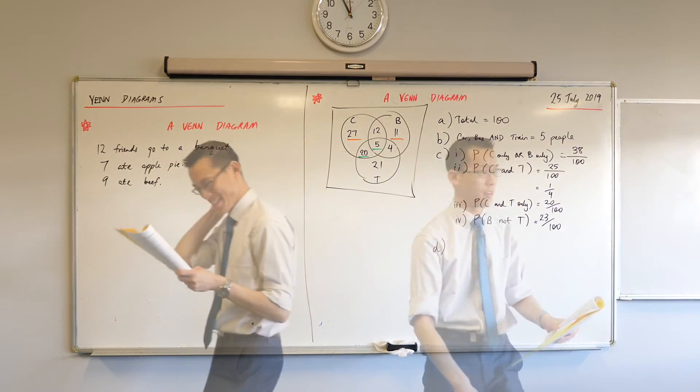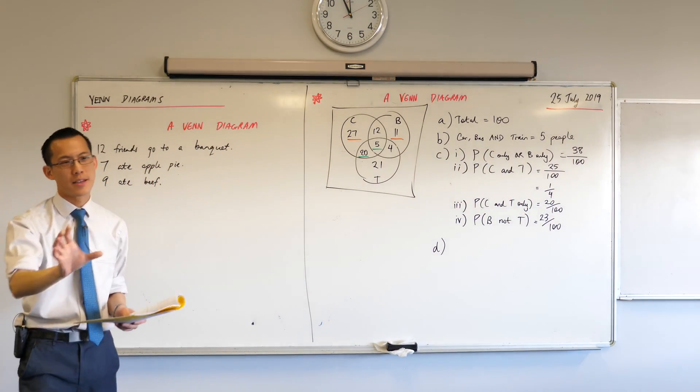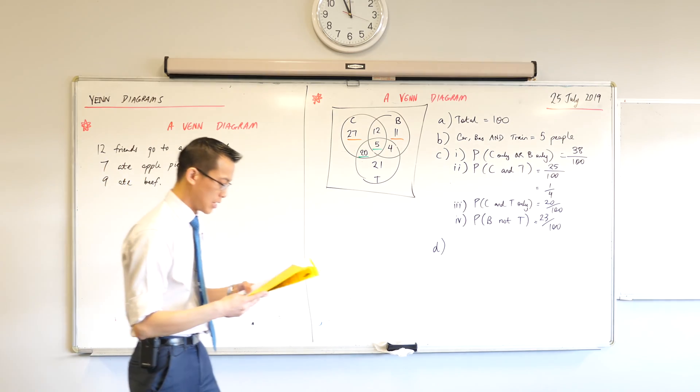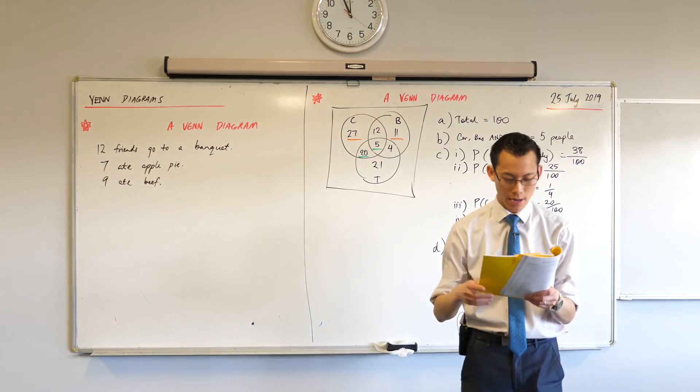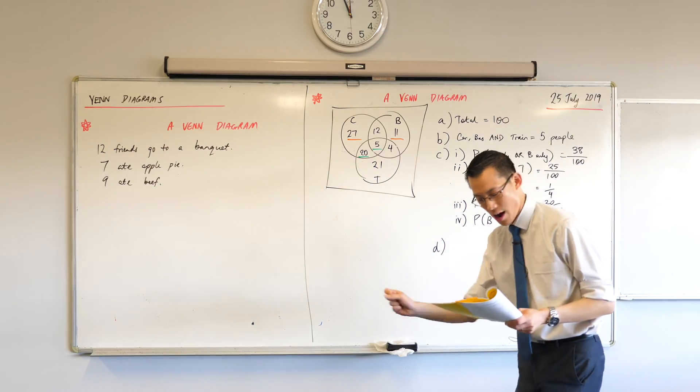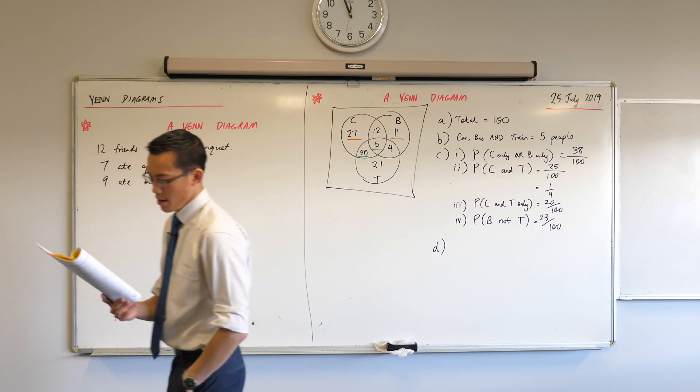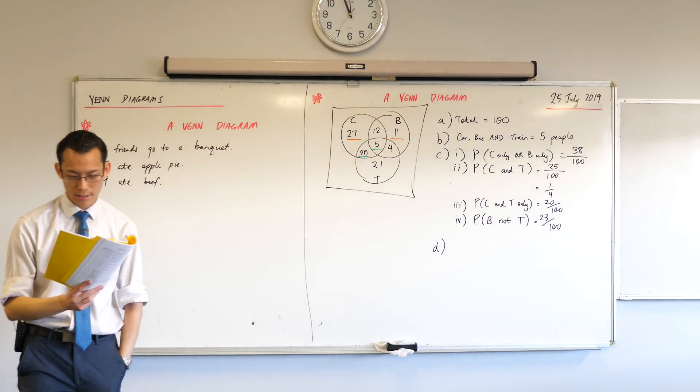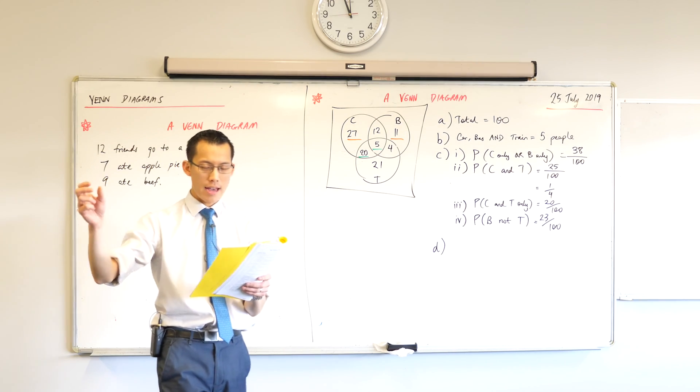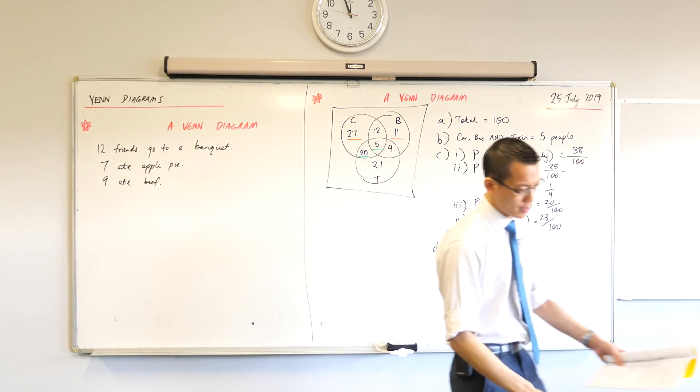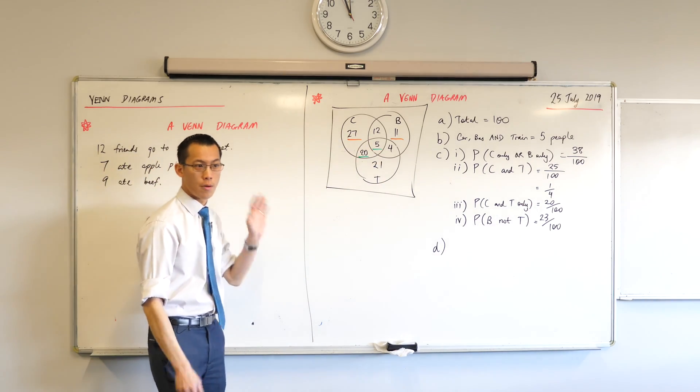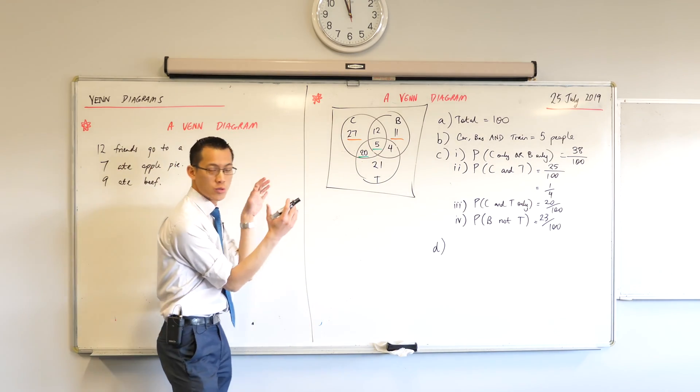But that's where part D differs. Have a look at it with me. A person's chosen at random. Now please, mark this phrase carefully. If you've got a highlighter, I would encourage you to get it out right now and highlight this phrase. Chosen at random from the people who travel by car or train only, but not bus. The people who travel by car or train only, but not bus. And then they ask the question, what's the probability that the person travels by car only? Now, because it says a person's chosen from that area, this is kind of what we would call conditional probability.